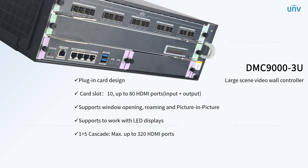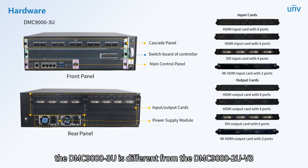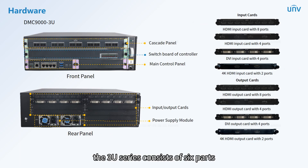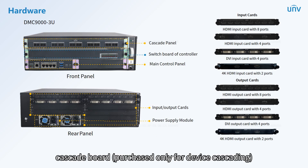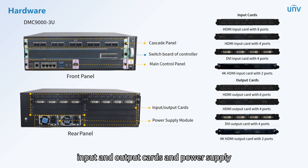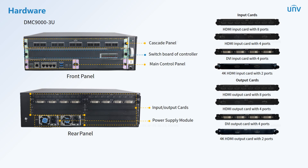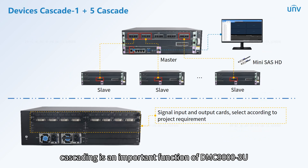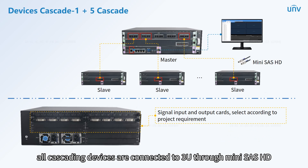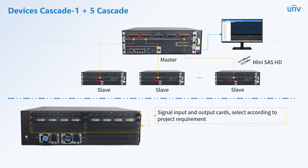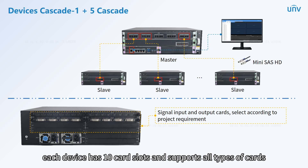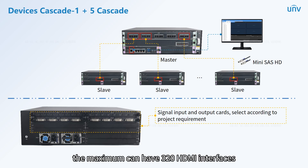The DMC-9003U meets the needs of large scenarios. Its hardware consists of six parts: the 3U body, control board, switchboard of controller, cascade board (purchased only for device cascading), input and output cards, and power supply. It supports HDMI and DVI boards. For cascading, all cascading devices are connected through ASUS HD cables; a maximum of six devices can be cascaded, each device has 10 card slots, and the maximum configuration can have 320 HDMI interfaces. Cards can be matched according to different project requirements.